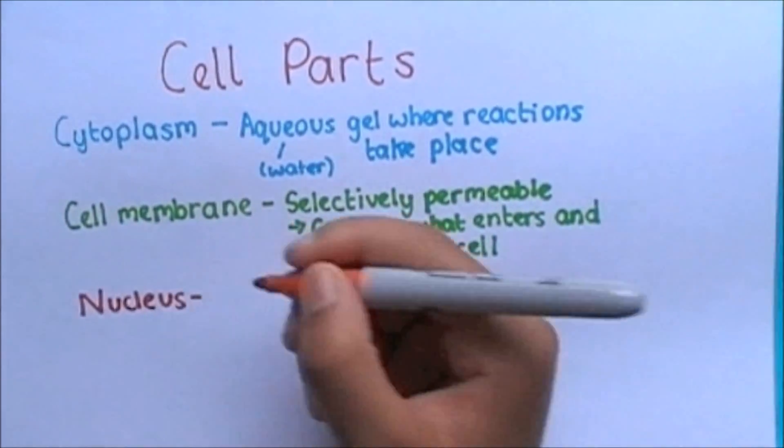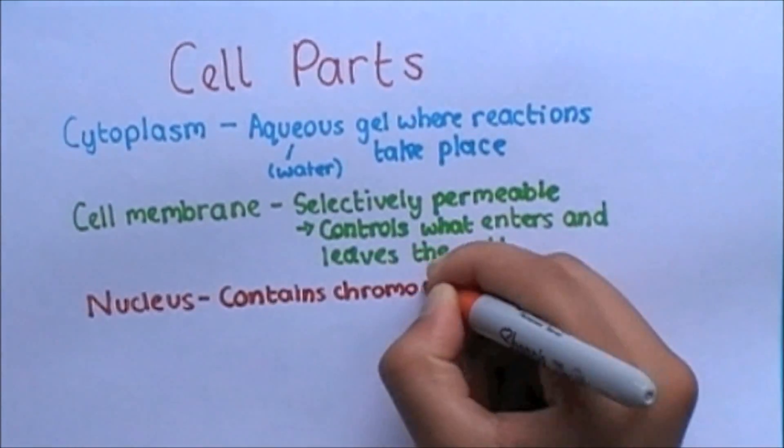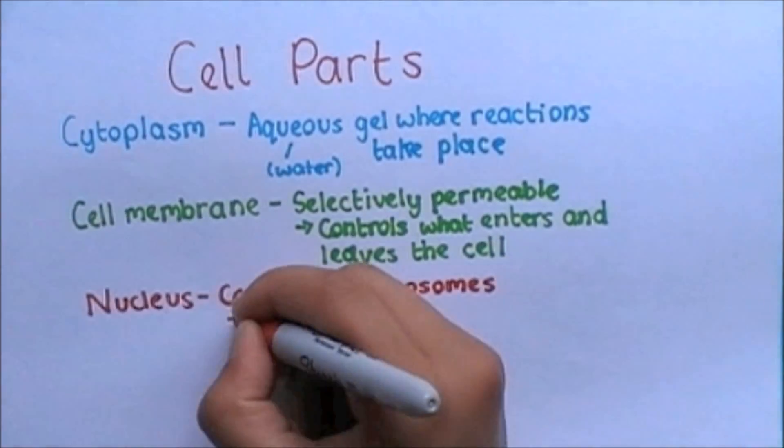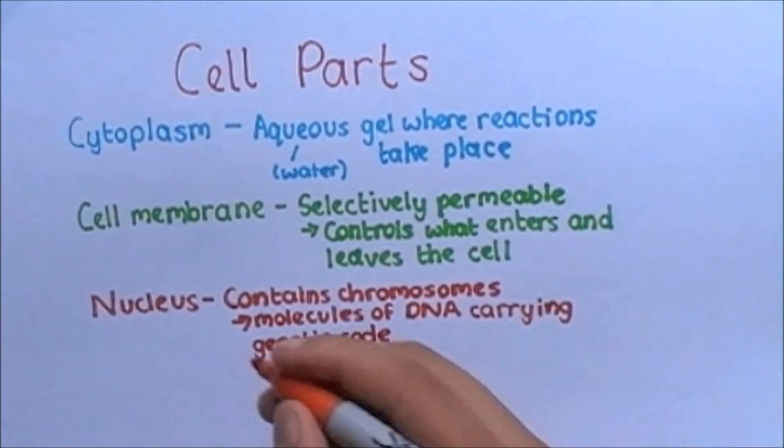The nucleus of a cell contains chromosomes, which are molecules of DNA that carry the genetic code. The nucleus is also the mastermind behind the cell, as it controls all of the cell's activity.